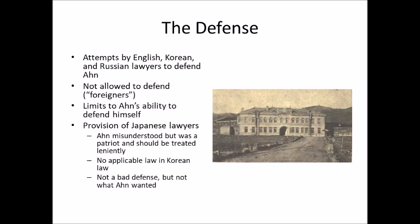Ahn wanted to challenge the Japanese colonial project in Korea and argue that because that project was wrong, what he did was right. He argued against the no-applicable-law position — in his closing remarks he said we have to have laws that govern us. In a sense Japan looked very good by giving him these defense lawyers, but in fact they hindered his defense. They didn't give him the defense he wanted: to challenge the Japanese colonial project and argue that its wrongness made his act right.